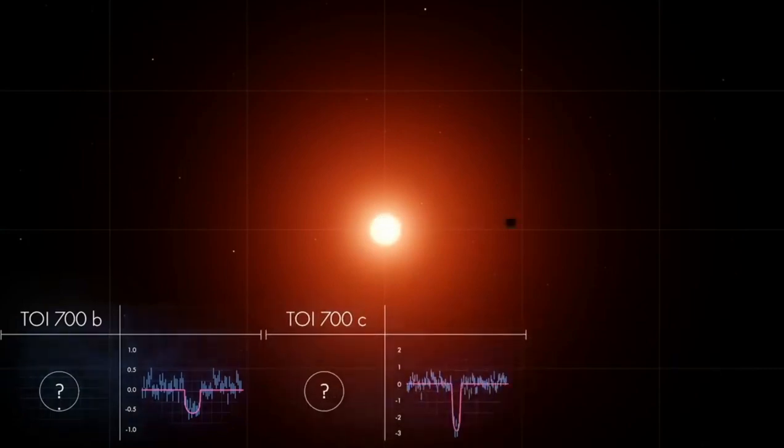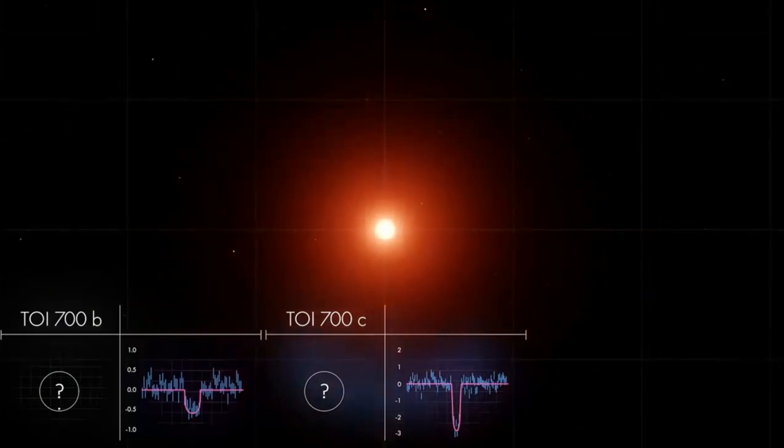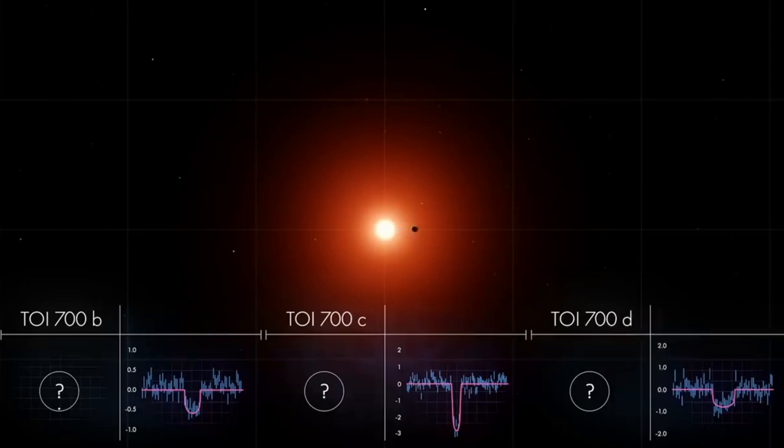The deeper, shorter transit means the planet is larger than the first, and the plane of its orbit is slightly tipped. A final set of transits showed TOI 700d, orbiting even farther out.